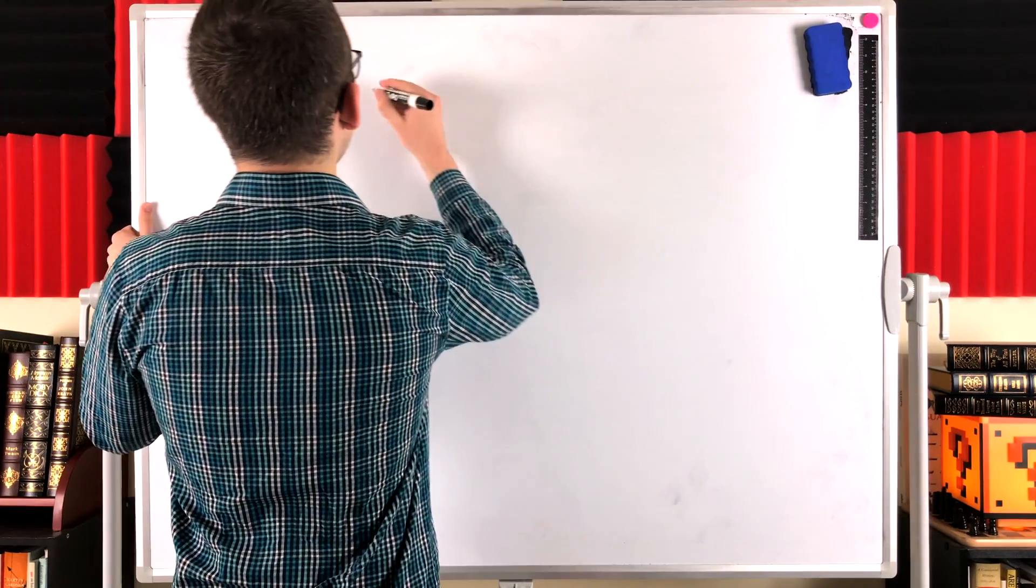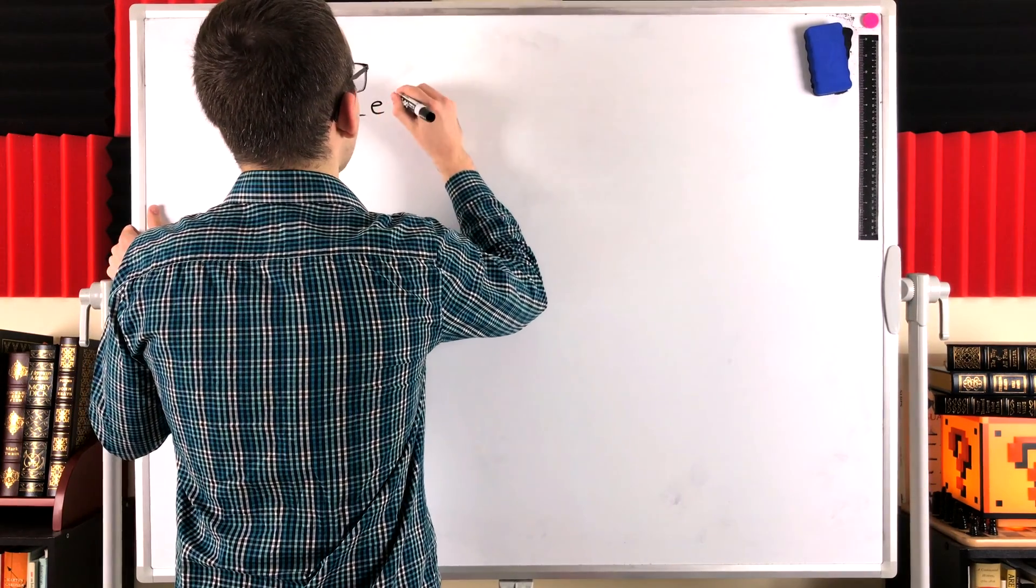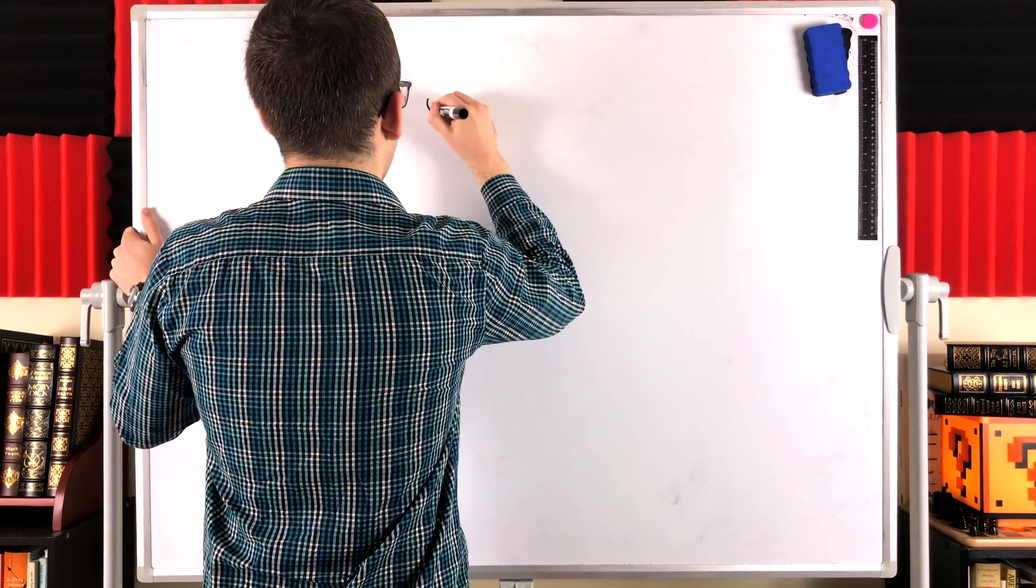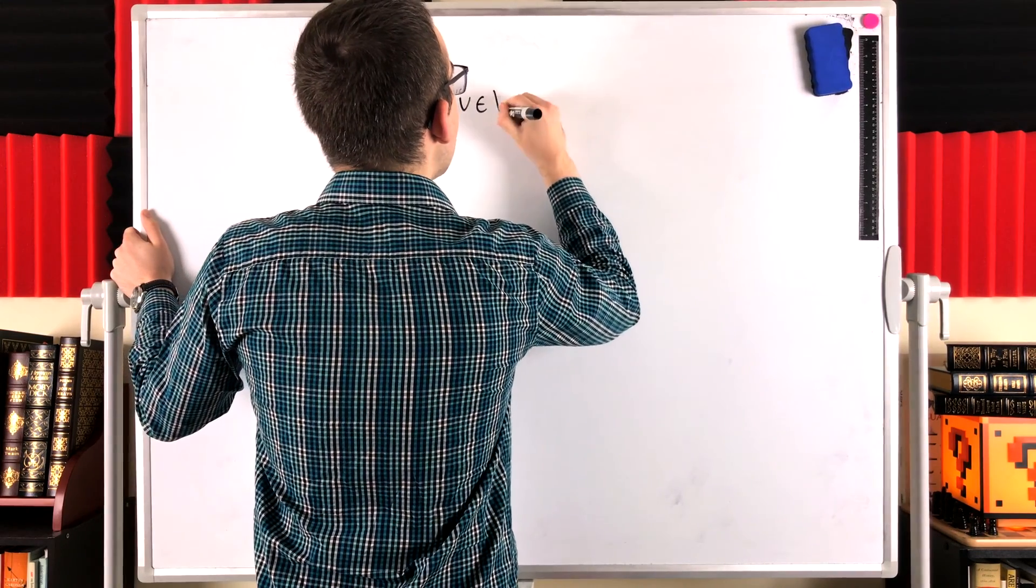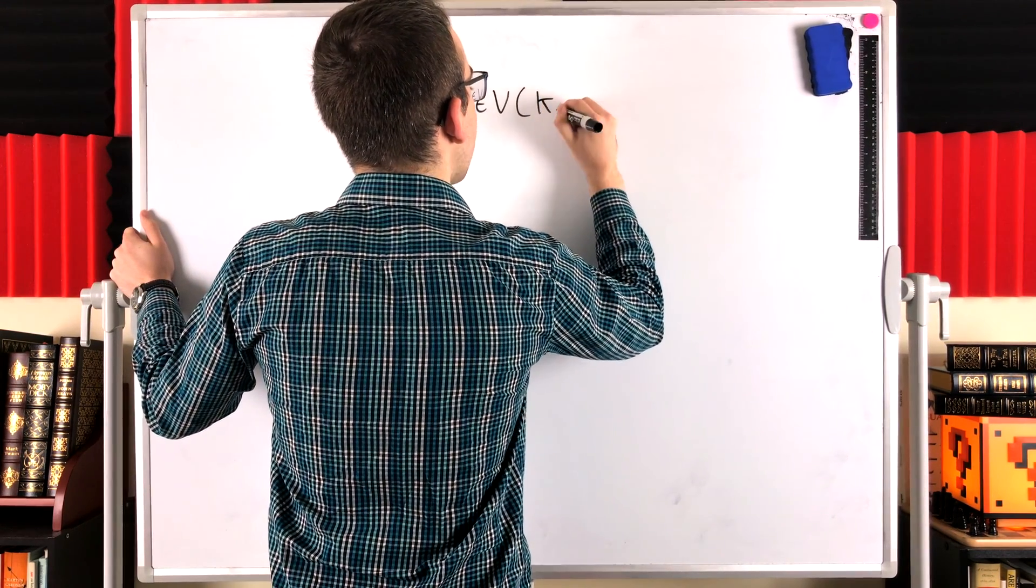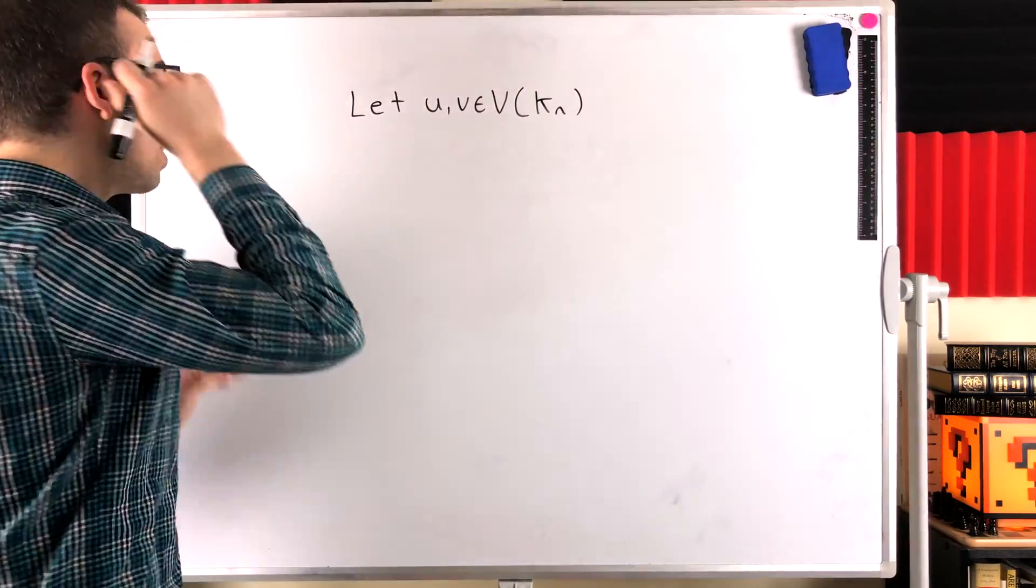So let's just take two vertices, two arbitrary vertices from a complete graph KN. Let u and v be elements of the vertex set of the complete graph on n vertices, KN.